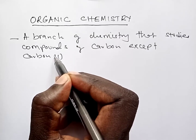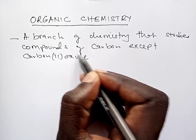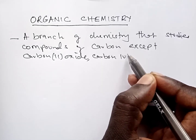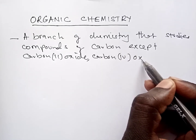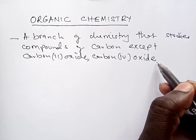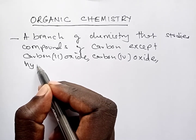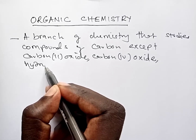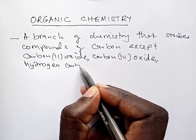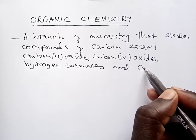The oxides of carbon are two: carbon monoxide (CO) and carbon dioxide (CO2). Those are the two oxides of carbon that we do not study in organic chemistry. We also exclude the salts of carbonic acid — that is hydrogen carbonates and carbonates.